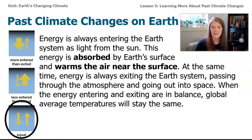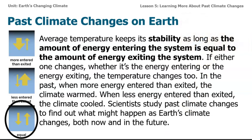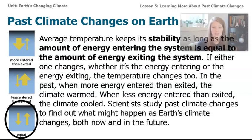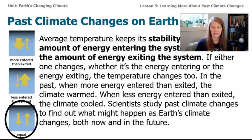The next paragraph says: 'Energy is always entering Earth's system as light from the sun, absorbed by Earth's surface and warming the air near the surface. At the same time, energy is always exiting Earth's system, passing through the atmosphere and going out into space. When the energy entering and exiting are in balance, global average temperatures will stay the same. Average temperature keeps its stability as long as energy entering equals energy exiting. If either changes, temperature changes too. Scientists study past climate changes to find out what might happen as Earth's climate changes now and in the future.'